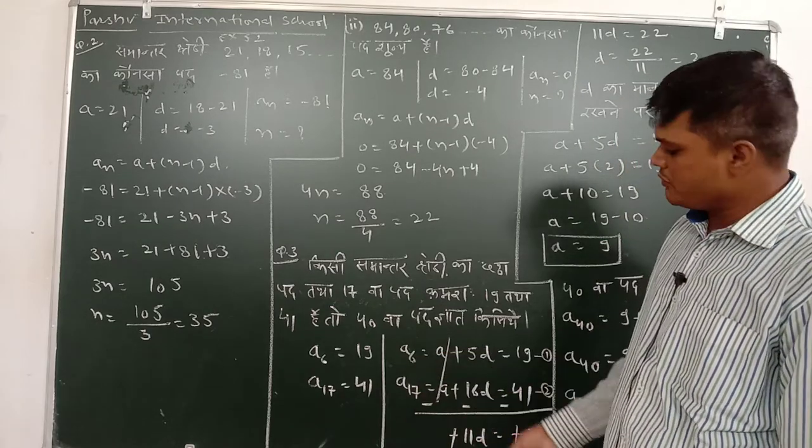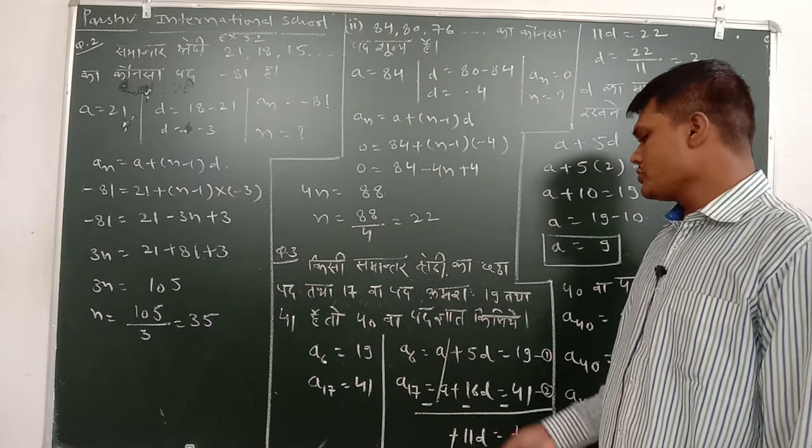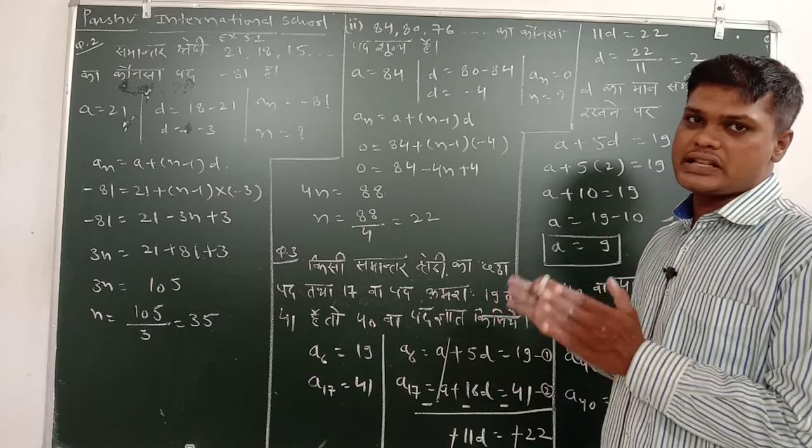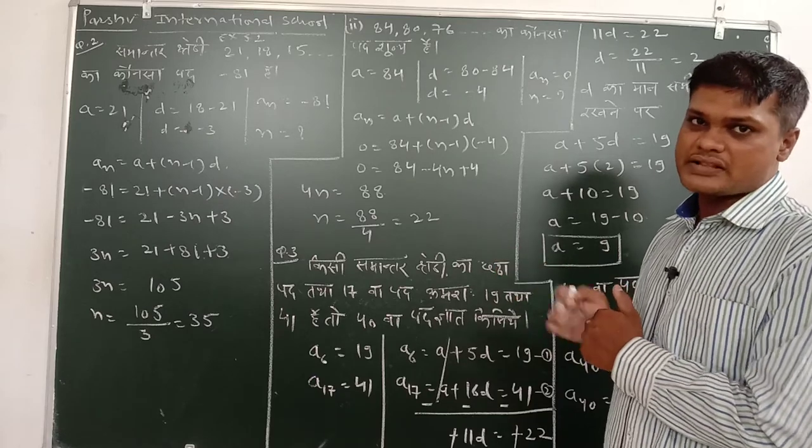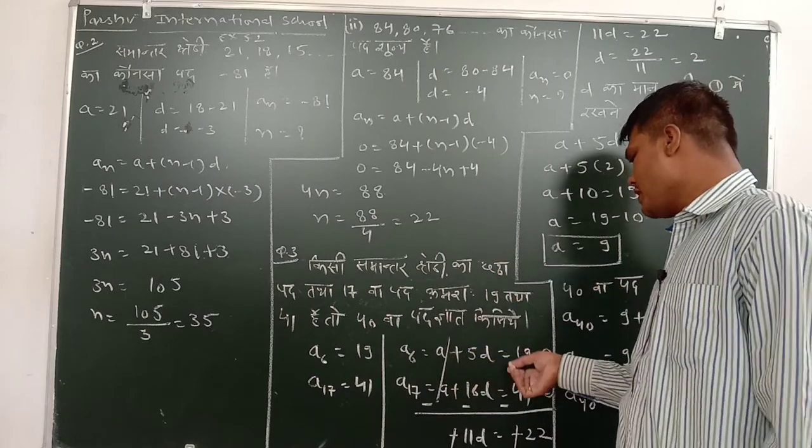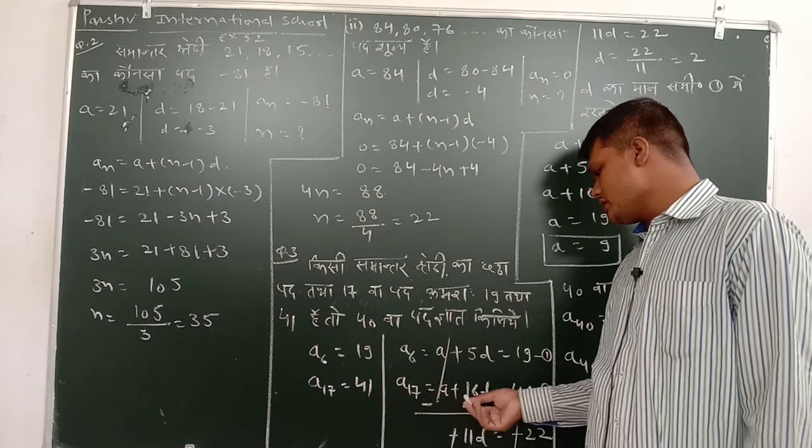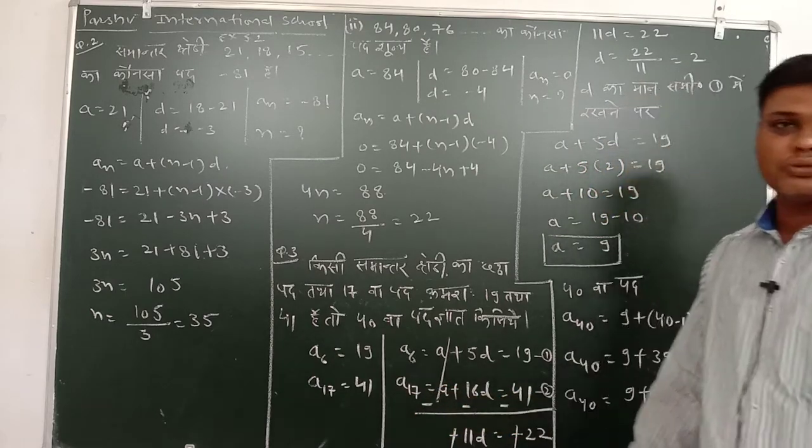Jaisa maine kal ki class pare bataya hai, a6 likha hua hai. To maine isko aise likha septa ho: a6 ka maan kya hua? a plus 6 minus 1 into d. Iska maan kya hua? a plus 5d barabar 29 de rakha hai humko. A17 ka maan kitna diya hua hai? a plus 16d barabar 41 humko de rakha hai.